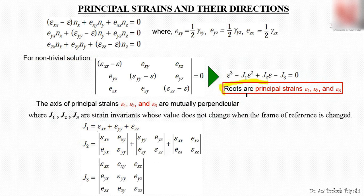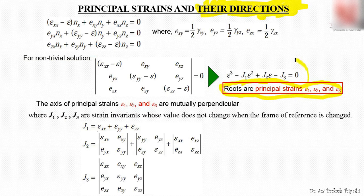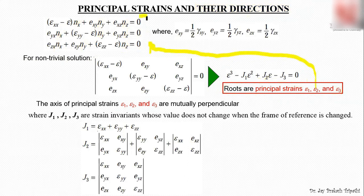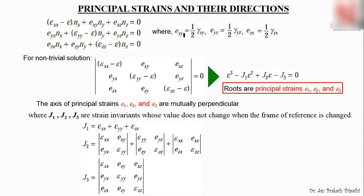To find the direction of each principal strain, we follow the same procedure as in stress analysis. We substitute the value of ε₁ into the three simultaneous equations and solve for n_x, n_y, n_z — these give the direction cosines of ε₁. Similarly, substituting ε₂ and solving for n_x, n_y, n_z gives the direction cosines of ε₂. The same procedure yields the direction cosines of ε₃.